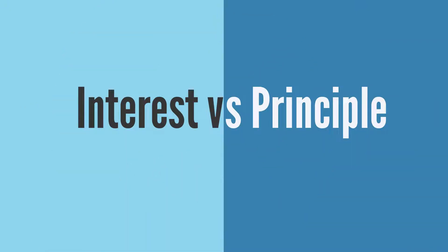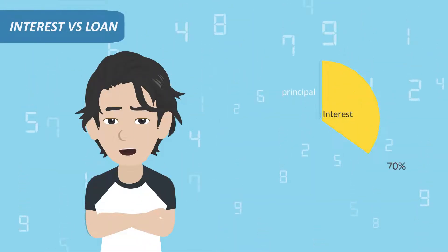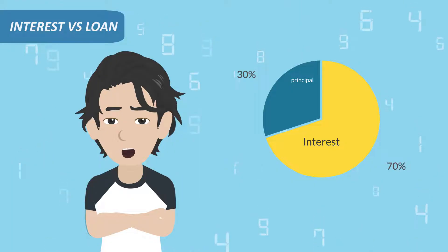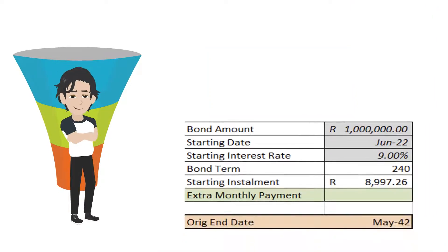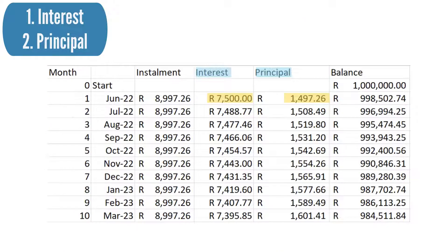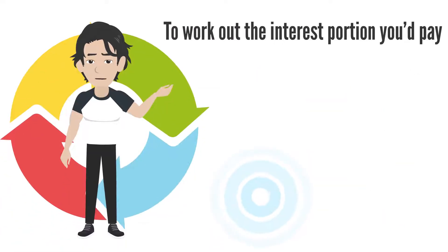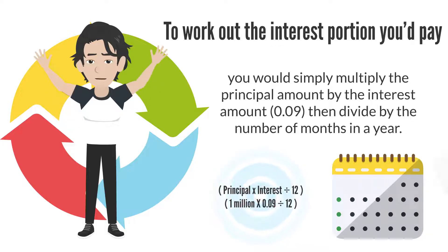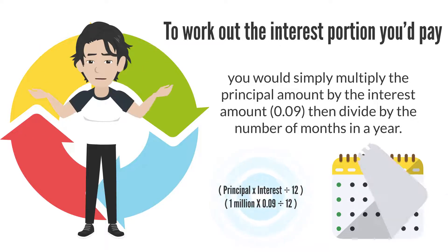Let's look at interest and principal. Your total monthly payment stays the same from month to month, while your interest and principal portions change in size. For example, a bond of a million rand at 9% for 20 years — the full payment for your loan would be 8,997 rand and 26 cents. This is the amount you would pay every month, which would then be broken down into interest payments and principal payments as you can see in the table below. To work out the interest portion, you would simply multiply the principal amount by the interest rate, then divide by the number of months in a year.